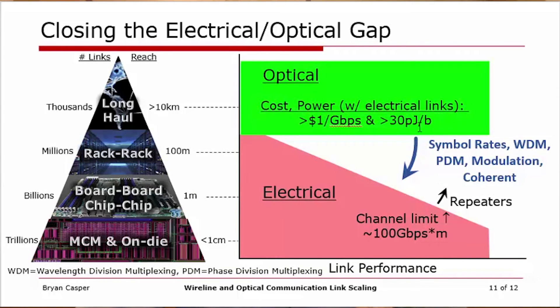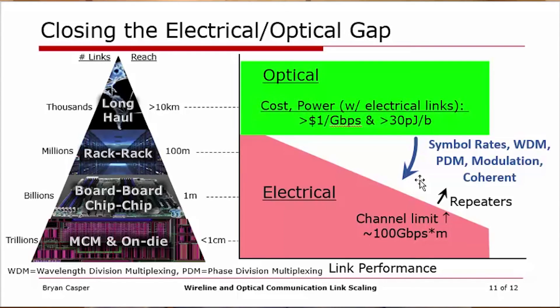Closing the gap: there is some potential in electrical to close the electrical-optical gap that has arisen as performance has scaled. But there appears to be great potential with silicon photonics techniques and other optical techniques, especially when symbol rates increase and techniques such as wavelength division multiplexing, polarization division multiplexing, and coherent links are utilized — a very natural fit for silicon photonics. If we can close this gap with very good energy efficiency and power, it will mitigate the issues caused by practical electrical scaling limits.